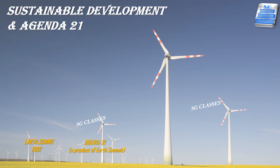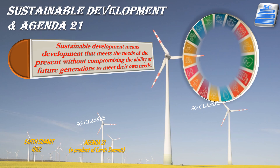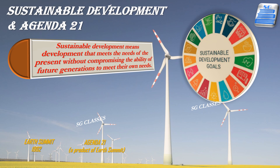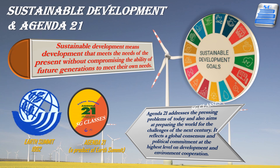Sustainable development is development that meets the needs of the present without compromising the ability of future generations to meet their needs. It seeks to achieve social and economic progress without exhausting the earth's finite natural resources. Agenda 21 is a non-binding action plan of the United Nations regarding sustainable development, a product of the Earth Summit held in Rio de Janeiro, Brazil in 1992, as a comprehensive plan of action to be taken globally, nationally and locally.